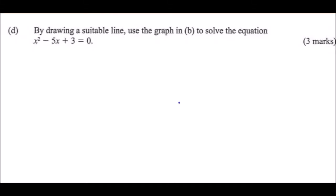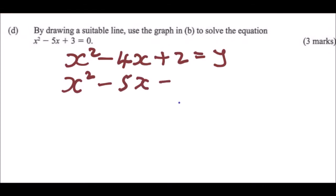For this question, we are told by drawing a suitable line, use a graph in B to solve the equation. This is the equation, x squared minus 5x plus 3. And remember, our function was x squared minus 4x plus 2 is equal to y. What's the difference here? We write here our x squared minus 5x plus 3 is equal to 0. We use these two equations and subtract.